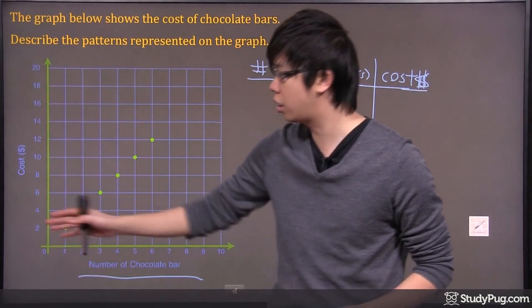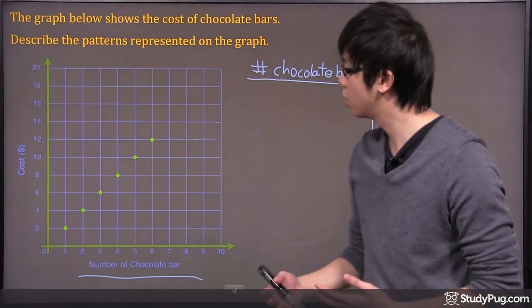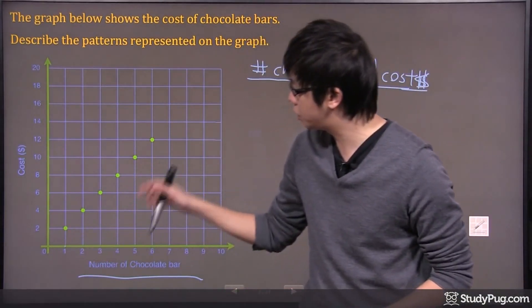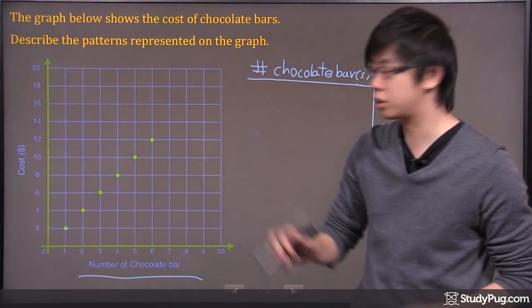Over here on the y-axis, you got the cost of the chocolate bars. If you see here, there's 1, 2, 3, 4, 5, 6, 7 dots.